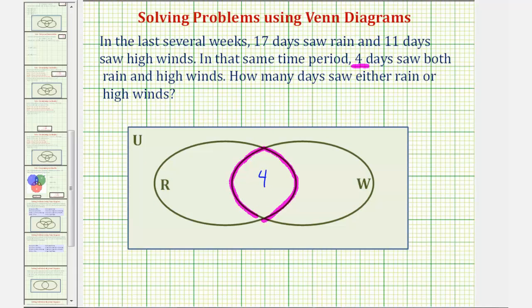We're also told that 17 days saw rain, which means there will be 17 days in set R. But notice how four of those days have already been accounted for—17 minus four—because those days saw rain and high winds.